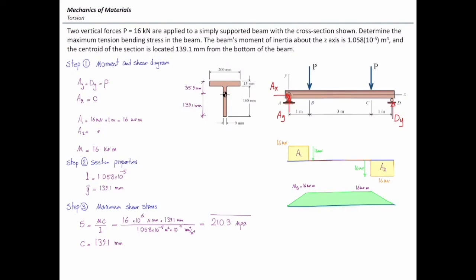The tricky part of this problem was determining which part of the section is subjected to tension, which depends on the sign of the moment. In this case the moment was positive, so the bottom of the section was under tension. That is why we used the distance from the centroid to the bottom of the section as c.